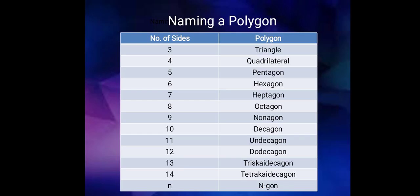This is the polygon with its corresponding number of sides. Three sides, it is a triangle. Four sides, a quadrilateral. Five sides, a pentagon. Six sides, a hexagon. Seven sides, heptagon. Eight sides, octagon. Nine sides, nonagon. Ten sides, decagon. Eleven sides, and decagon.